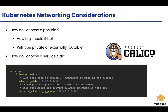Both of these options are things you'll have to consider and configure in the Rancher YAML file. As you can see here, the cluster CIDR and the service cluster IP range need to be defined there.